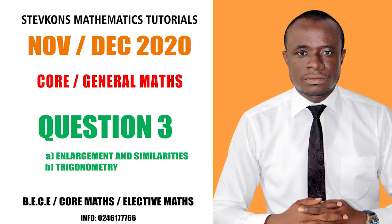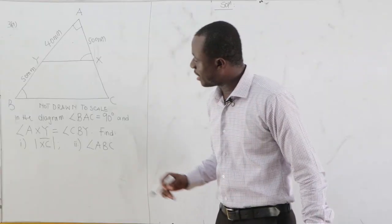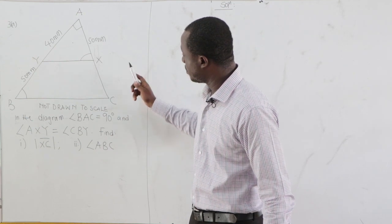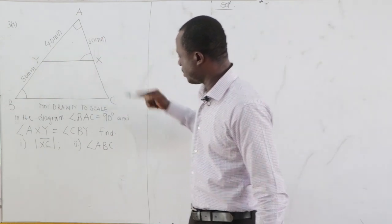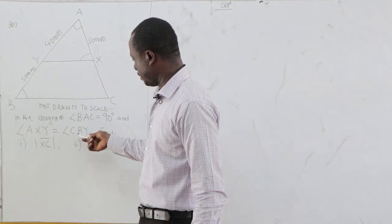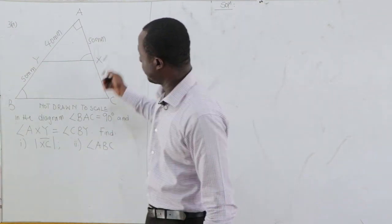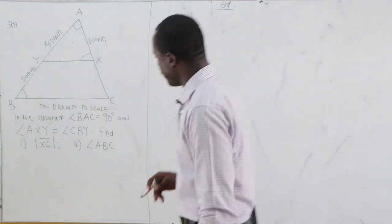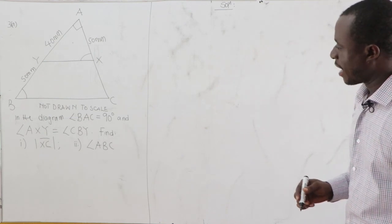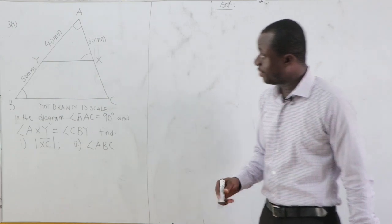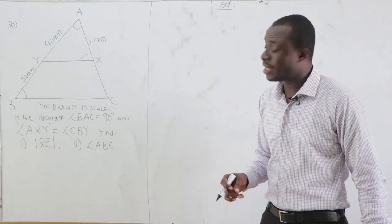This is question number three. There's a diagram where angle BAC is 90 degrees, and AXY is equal to CBY. We have been told to find the length XC and then the angle ABC. From this, we can get two similar triangles.